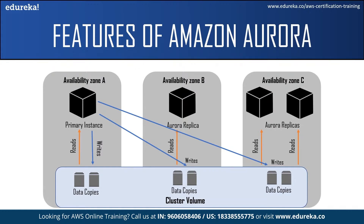The Aurora replica connects to the same storage volume as the primary DB instance and supports only read operations. Each Aurora DB cluster can have up to 15 Aurora replicas in addition to the primary DB instance. Aurora replicas are located in separate availability zones, providing high availability. When a primary DB instance becomes unavailable, Aurora automatically fails over to an Aurora replica, and you can specify the failover priority. In a multi-master cluster, all DB instances have read-write capability, so the distinction between primary and replica does not apply.